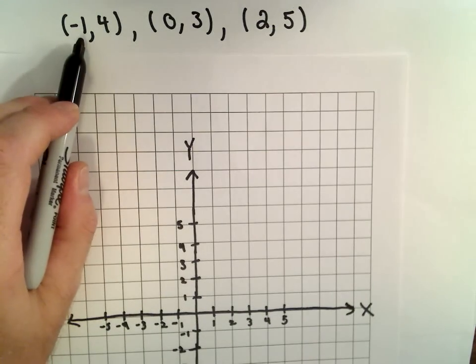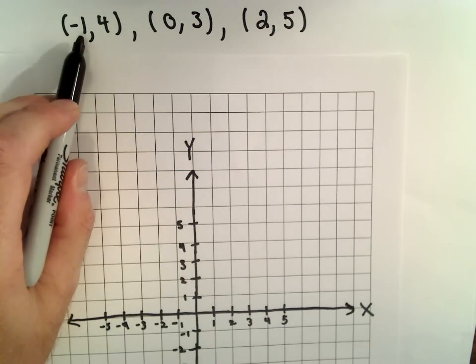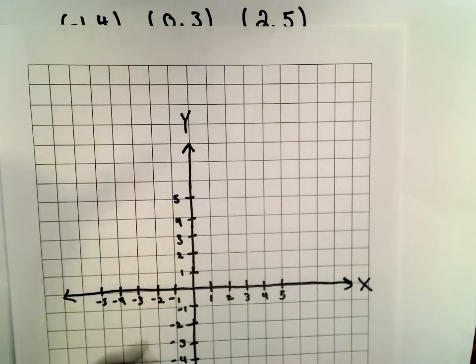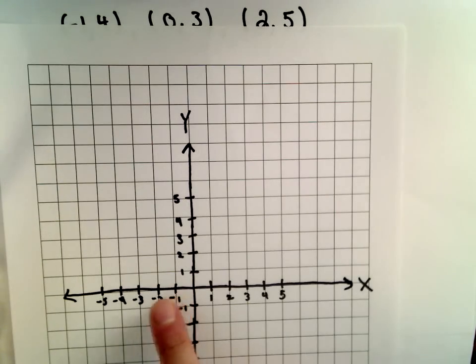For my first point, let's go to the x-coordinate of negative 1. So negative 1 is going to put me right here—I just move one unit to the left of the origin.